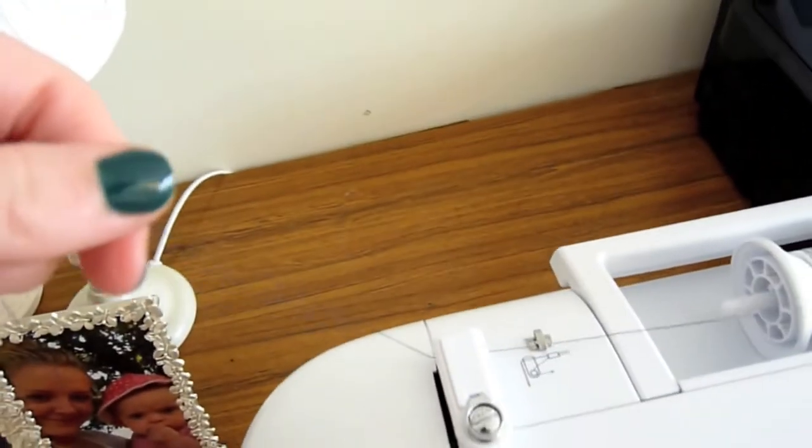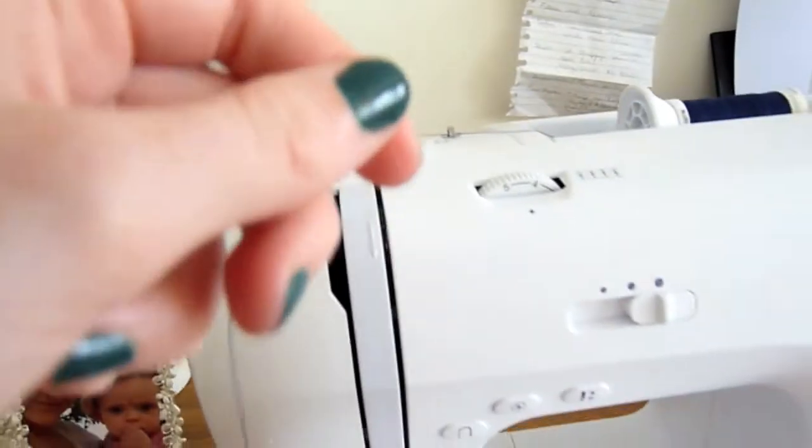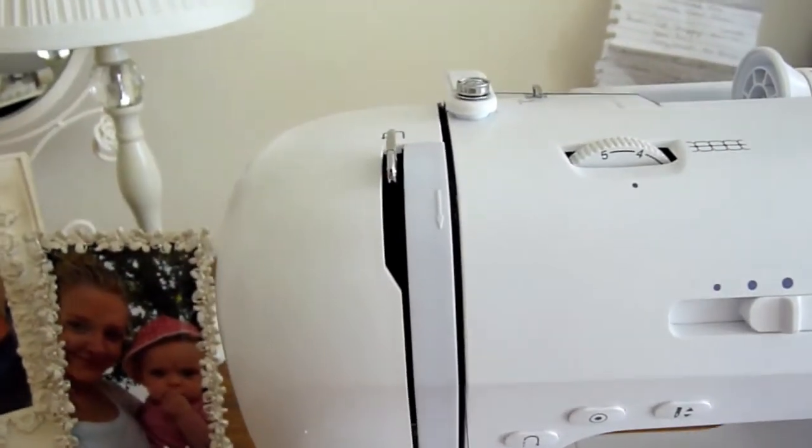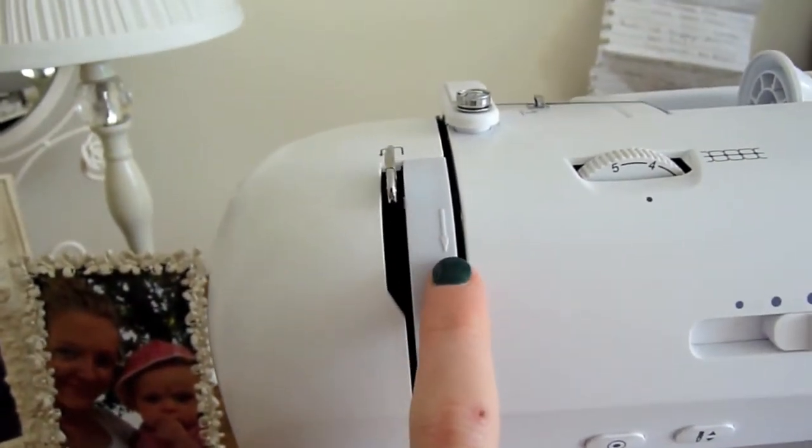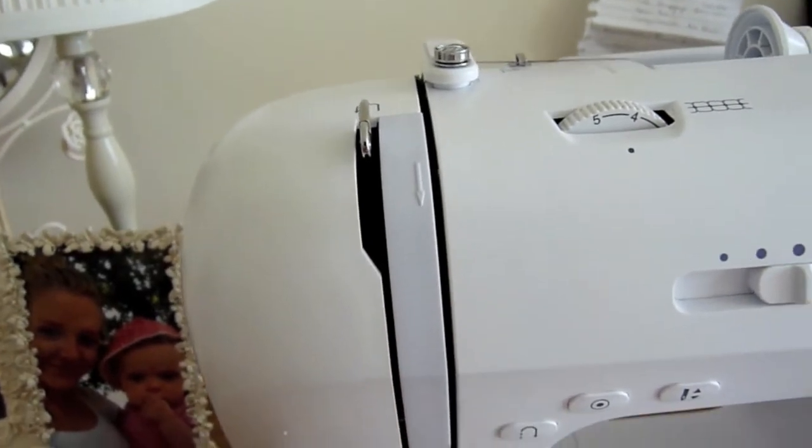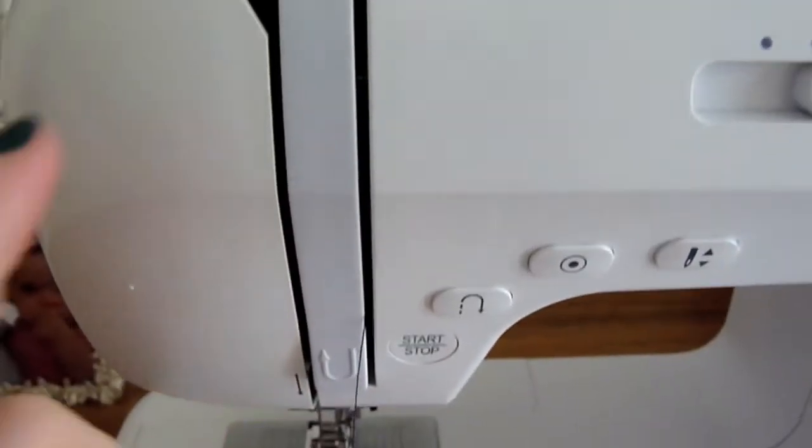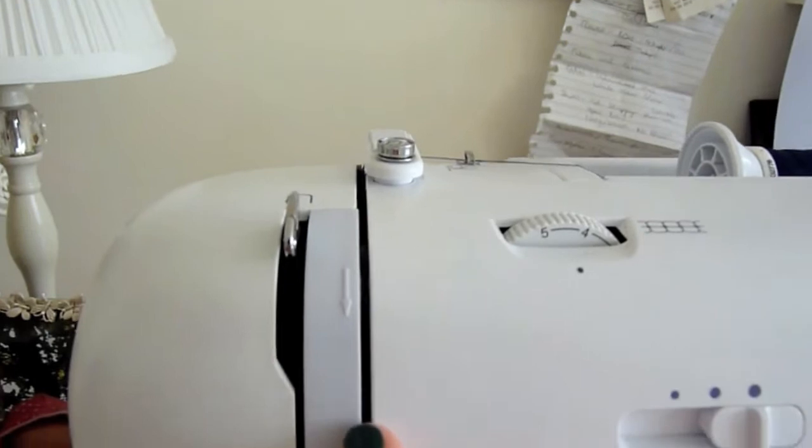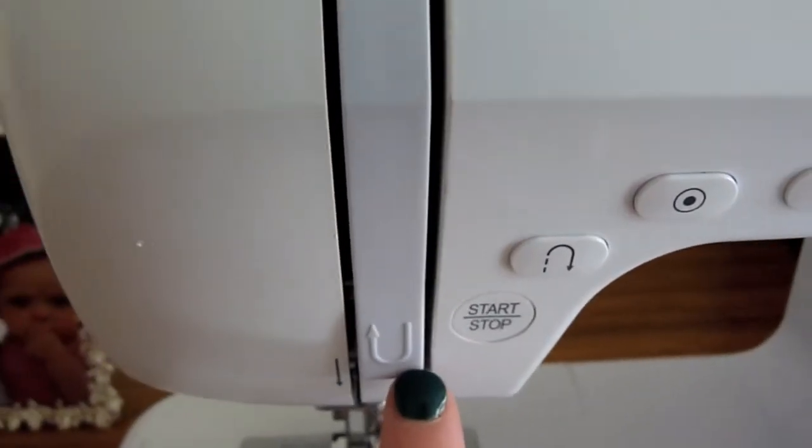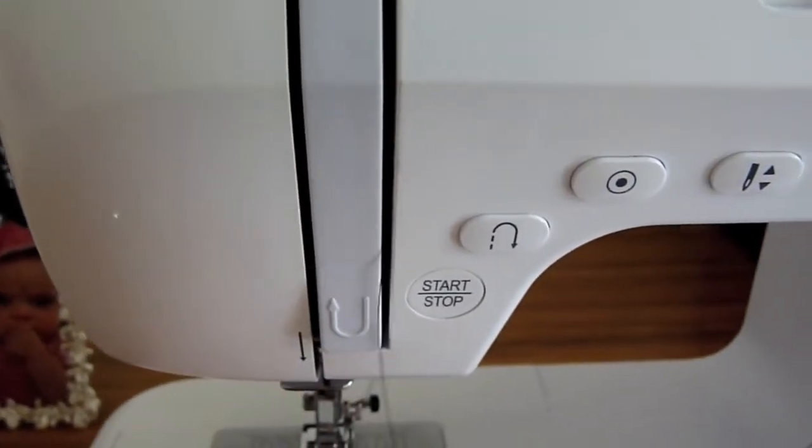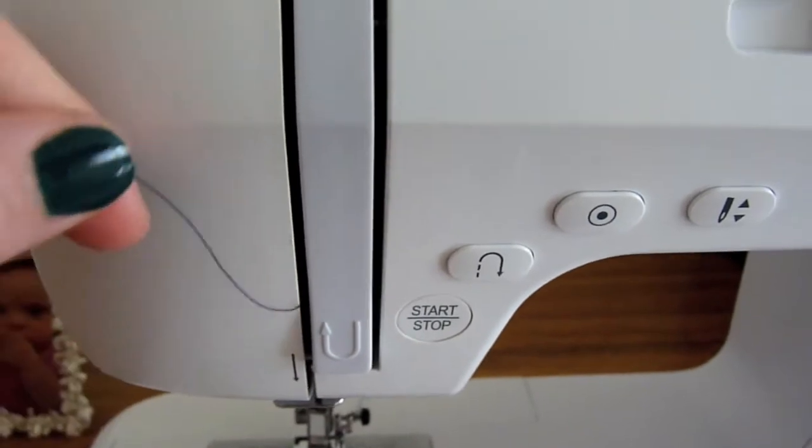Now you want to take this thread and bring it down. You can see there's an arrow here. You're going to bring it down and it goes through this little silver wheel called the tension module, which is just inside here. So then you want to follow the arrows. There's an arrow here and here as well. So you want to take your thread, get it to the bottom and up.